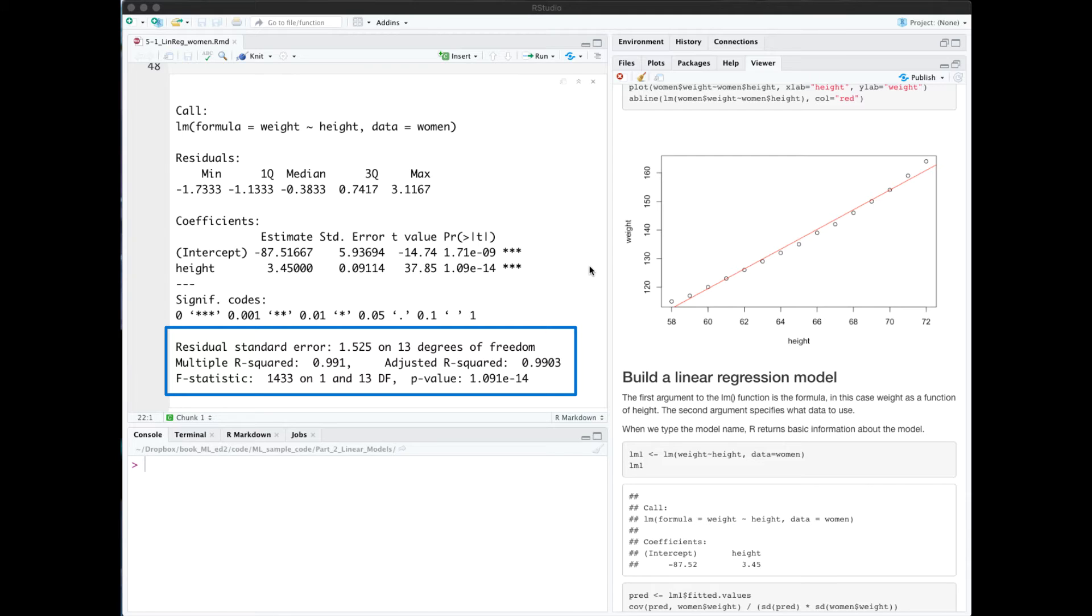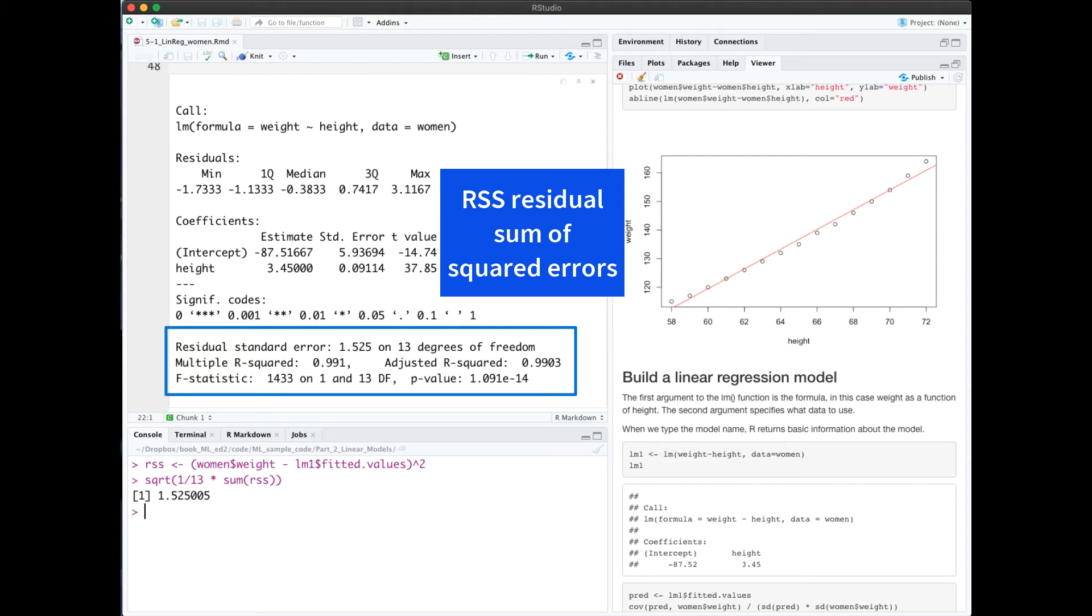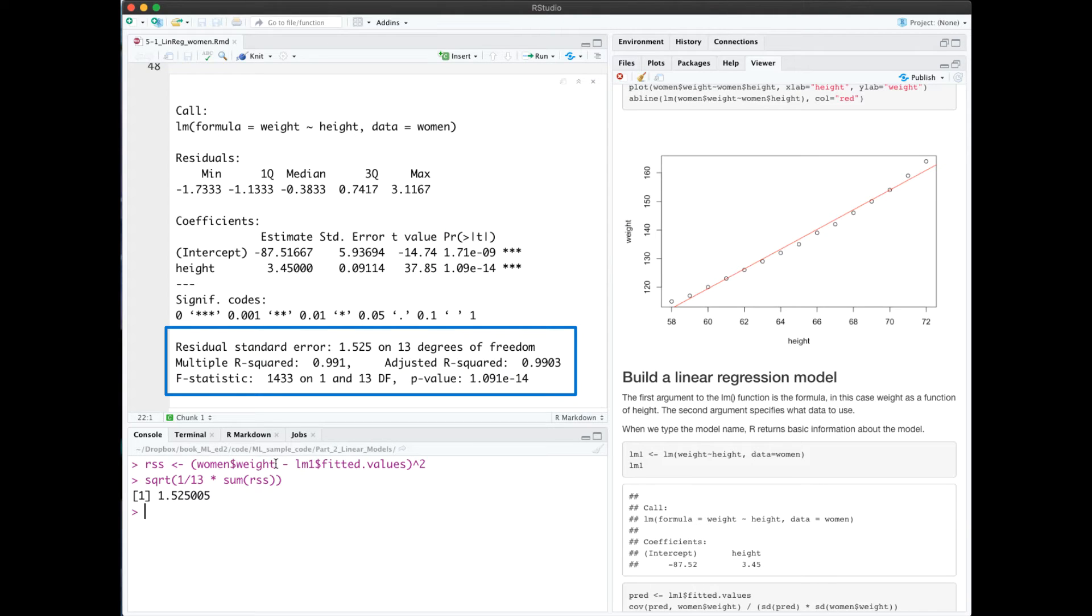First we have residual standard error, RSE. That's in units of y, about 1.5 pounds. The RSE is calculated from the RSS, the residual sum of squared errors. I've calculated that here by taking the weight, the true values, minus the fitted values which I can extract from the model and square those.